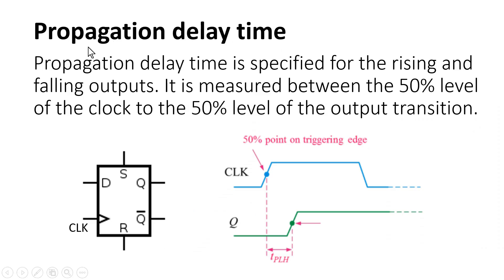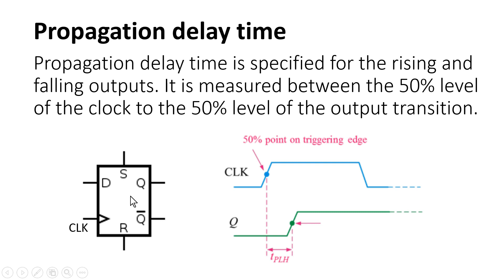Let us discuss the first important characteristic of the flip-flop: propagation delay time. Propagation delay time is measured whenever there is a transition on the output of a flip-flop. It is measured between the 50% level of the clock to the 50% level of the output transition. For a positive edge triggered flip-flop, we consider the positive edge of the clock at the 50% point to the 50% transition on the output.